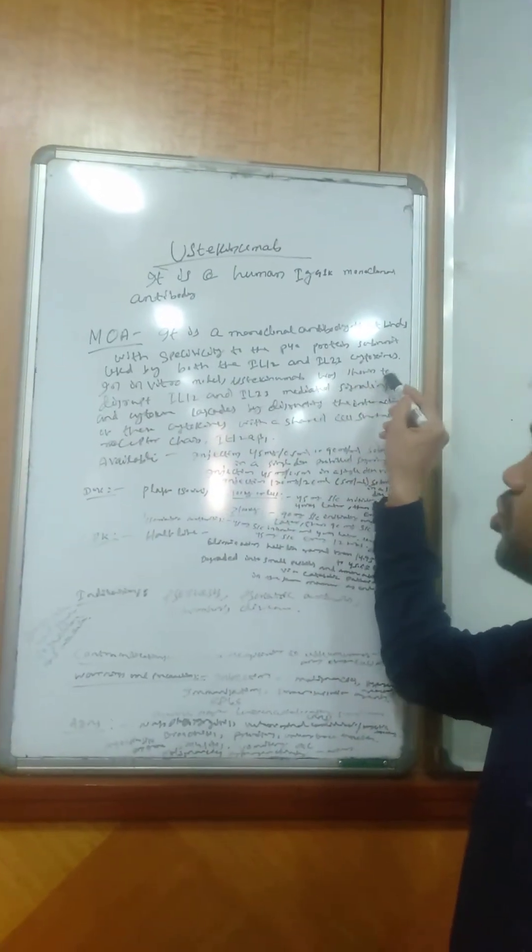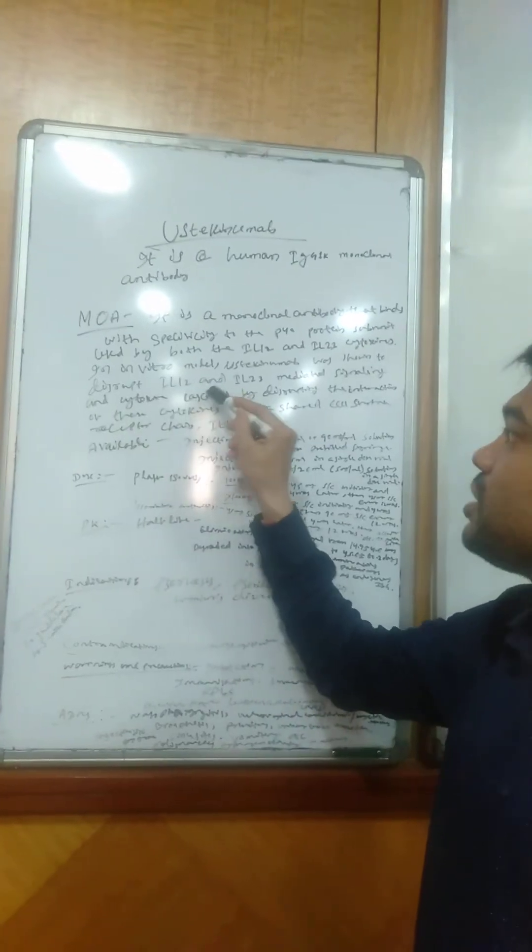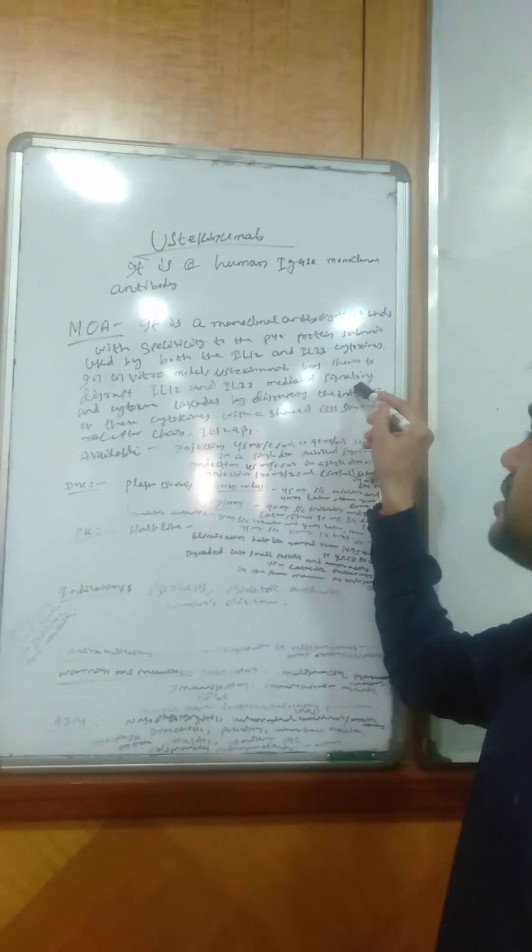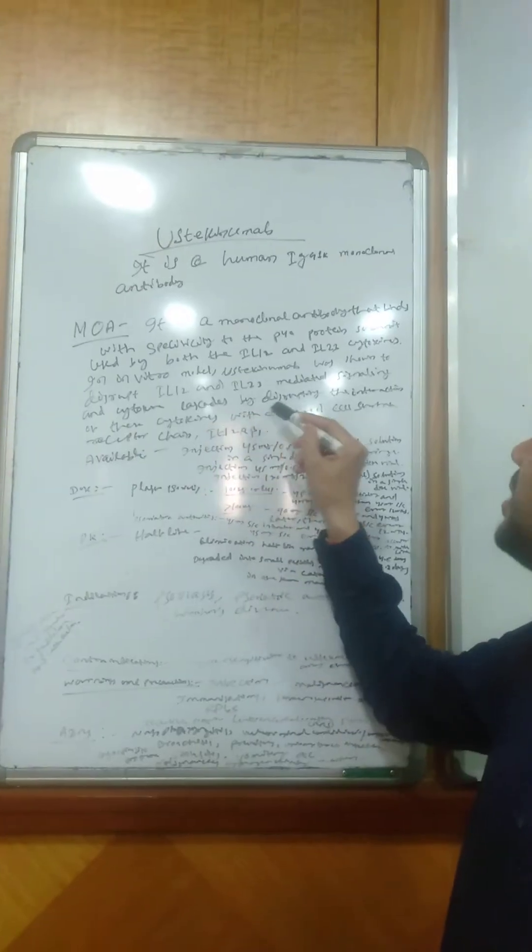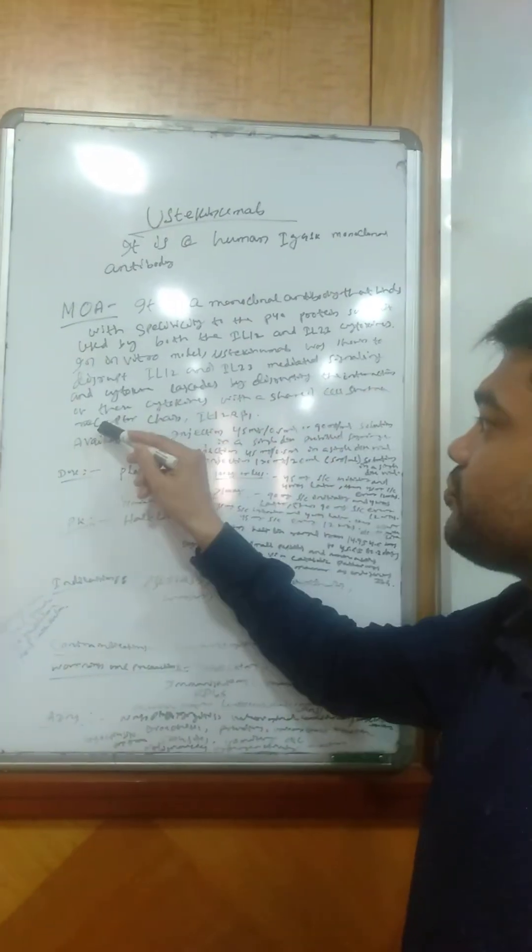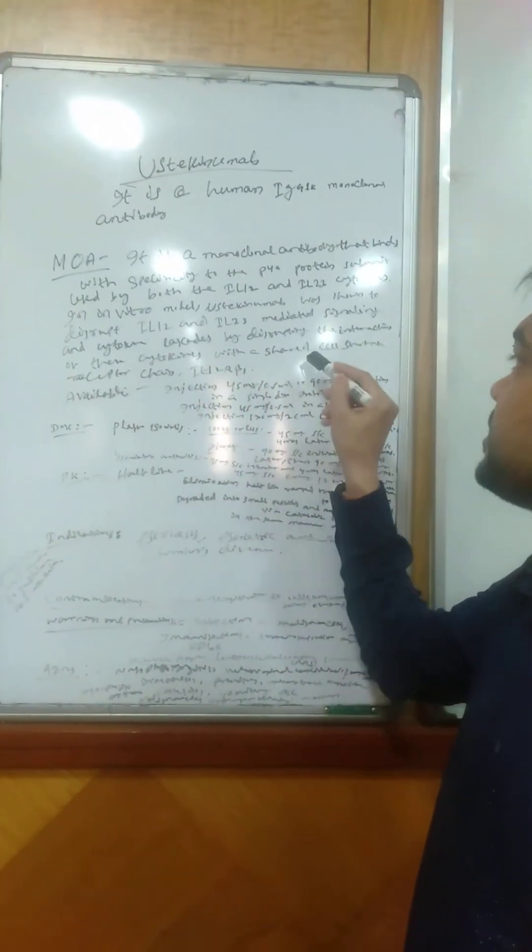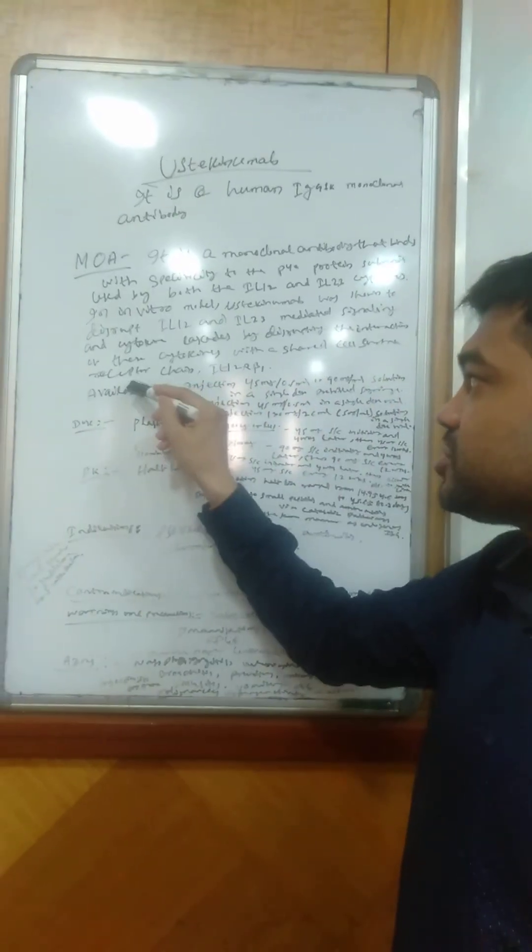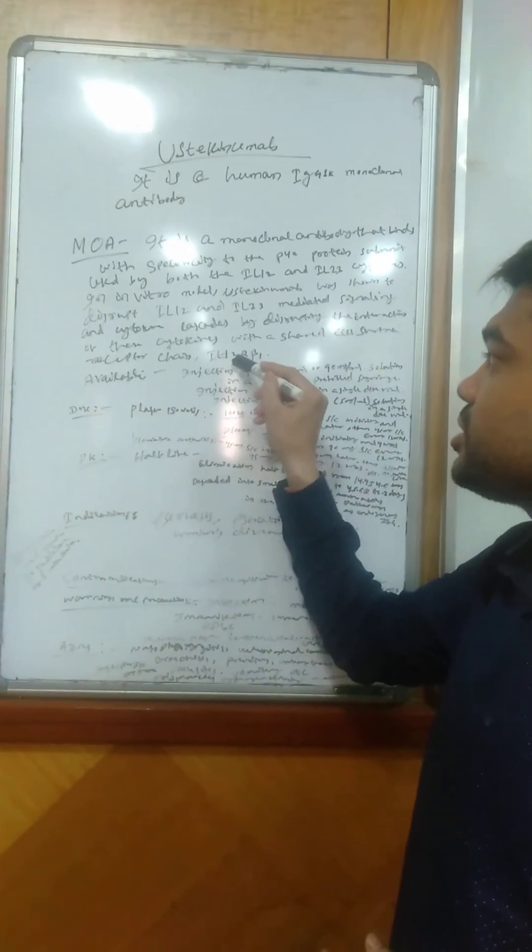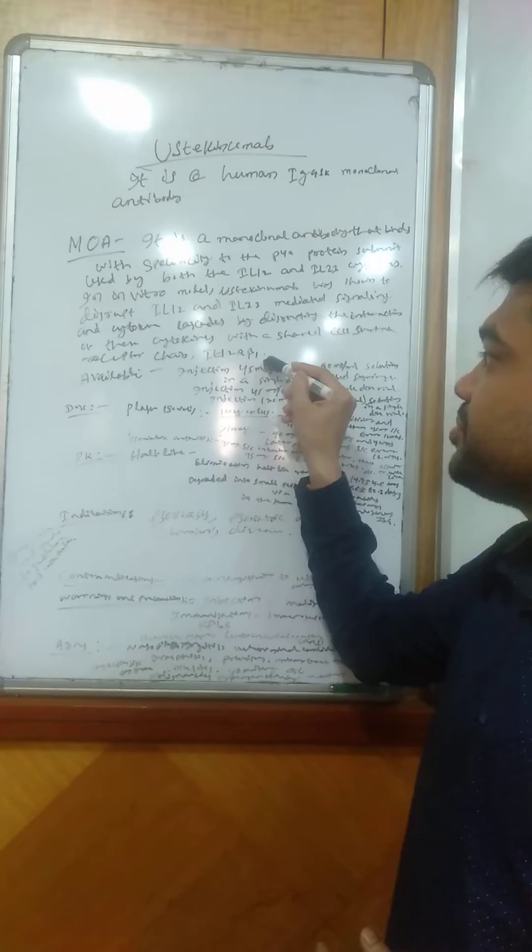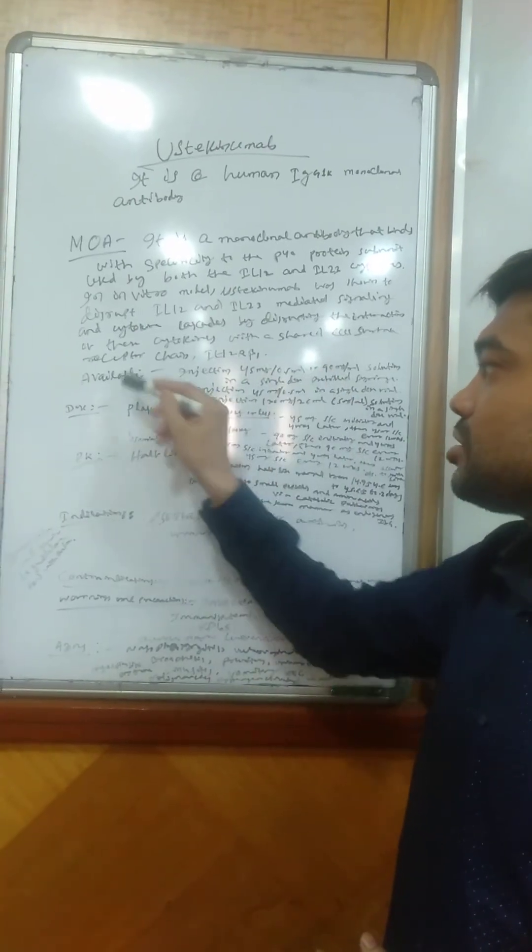Ustekinumab was shown to disrupt interleukin-12 and interleukin-23 mediated signaling and cytokine cascades by disrupting the interaction of these cytokines with a shared cell surface receptor chain interleukin-12 R-beta-1.